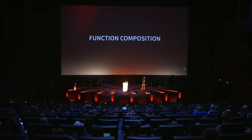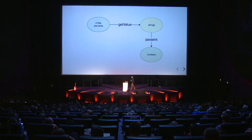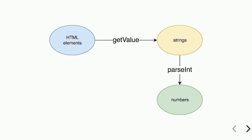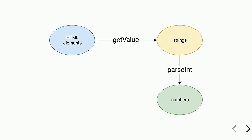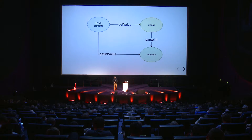For this we need to go back to school for a moment. A function in mathematics is a relation between two sets that associates elements from one set to another. In functional programming, functions are just like mathematical functions. Here we have two functions: getValue, which maps HTML elements to strings, and parseInt, which maps strings to numbers. Can we create a new function that is a relation between HTML elements and numbers? We can, by composing these two functions — first calling getValue, then passing its result to parseInt — ending up with a function that takes an HTML element and returns its value as a number.